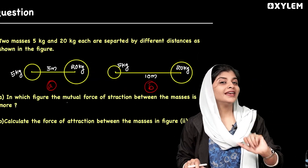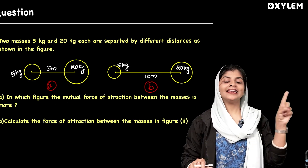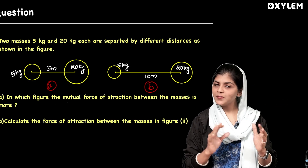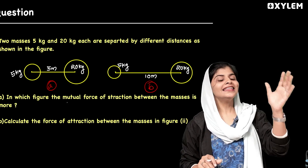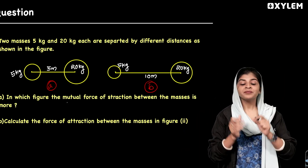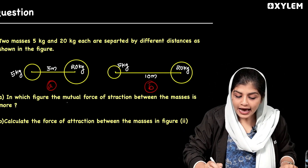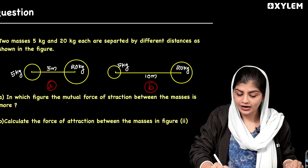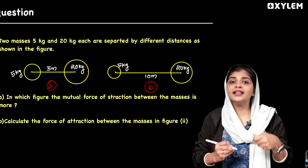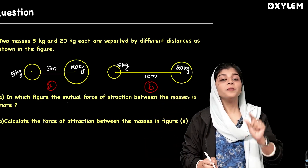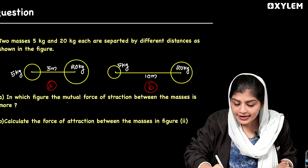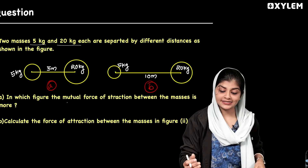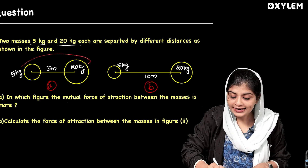What kind of questions are we going to ask? If you want to ask a Christmas exam question, we will ask a question. Two masses — 5 kg and 20 kg — are separated by different distances. You can see the two layers of mass.